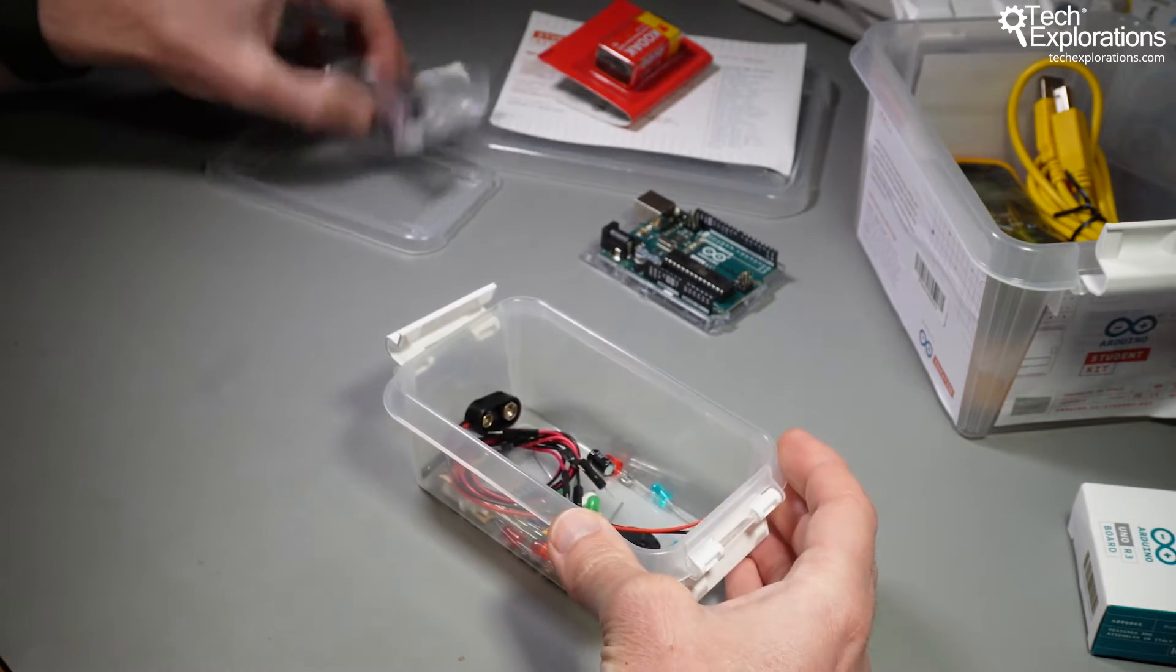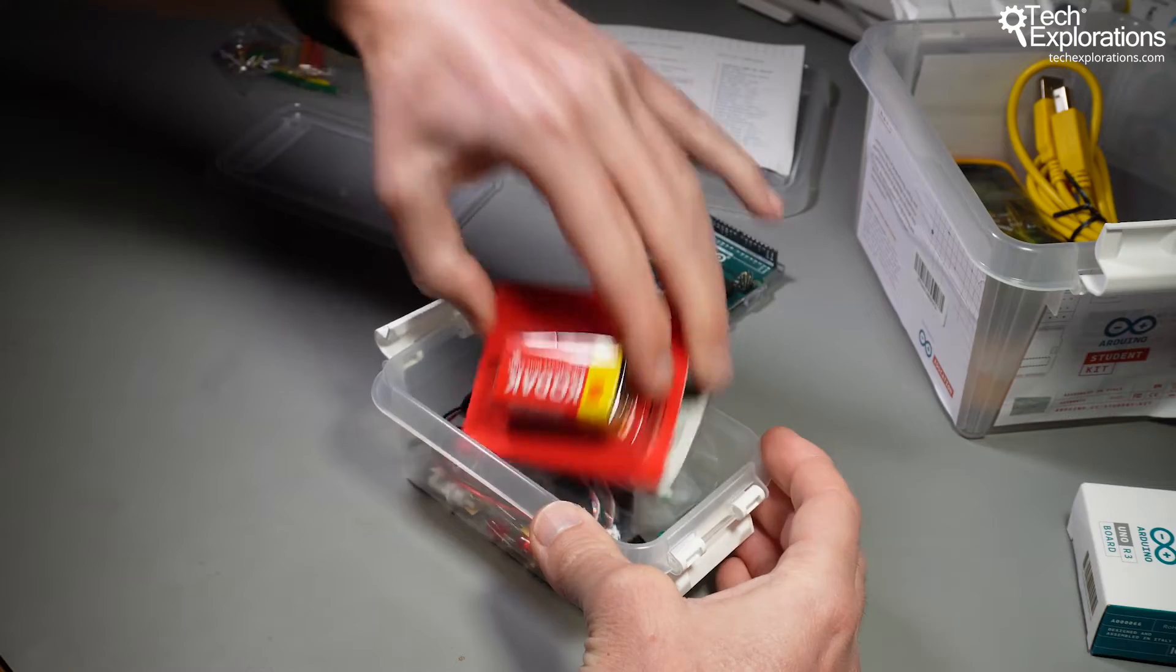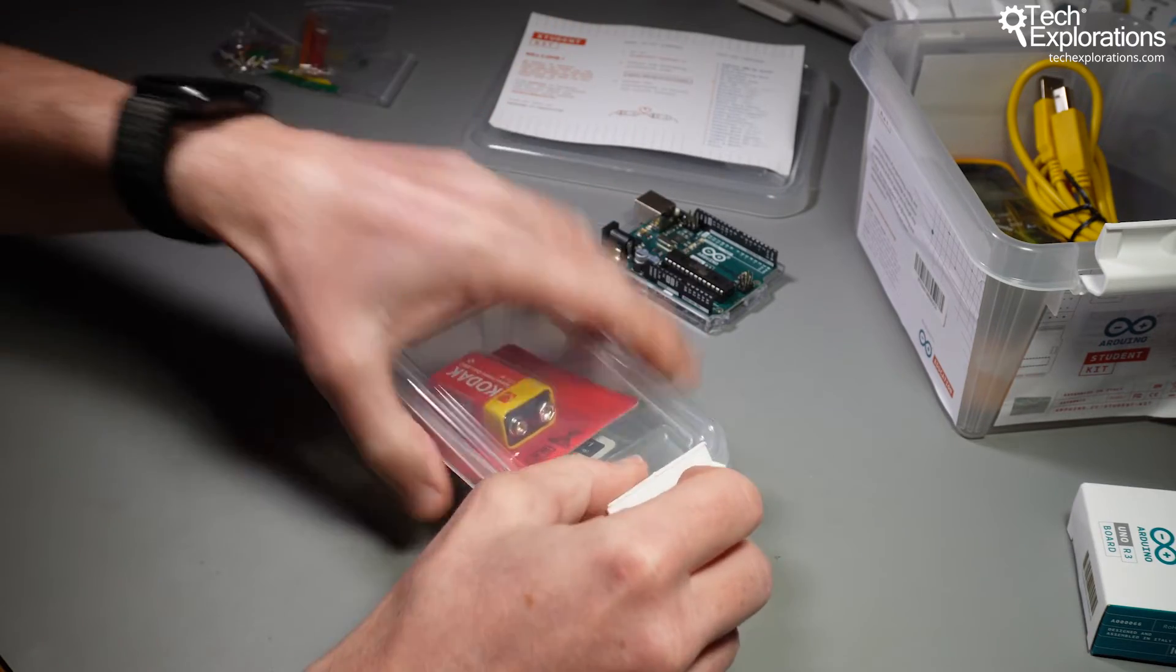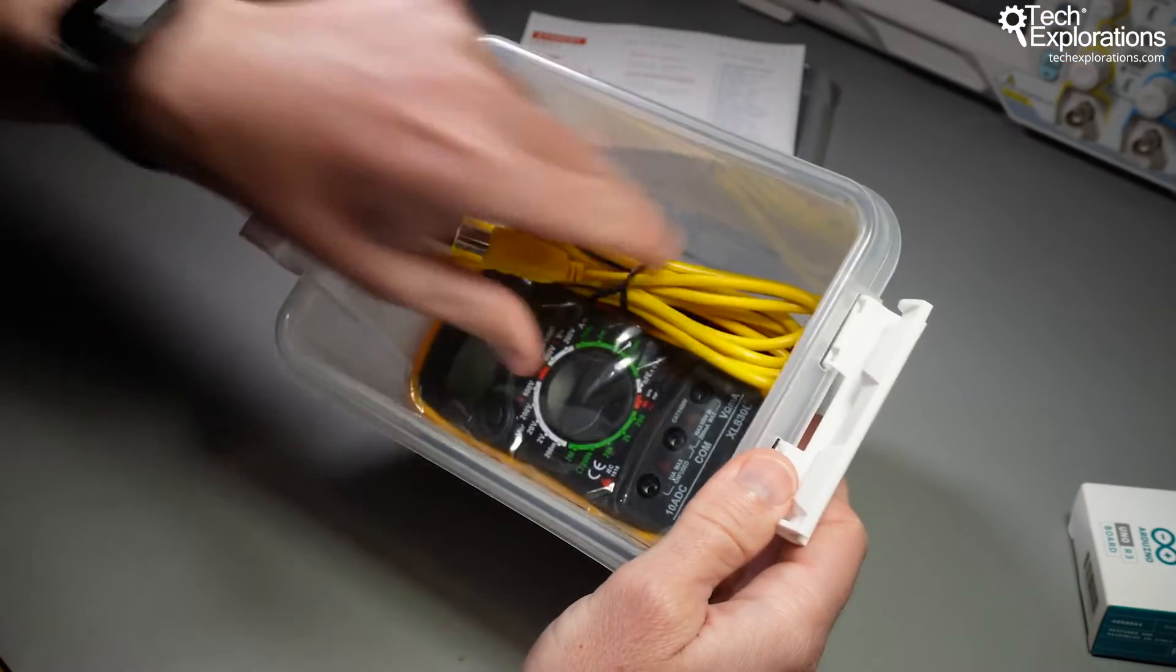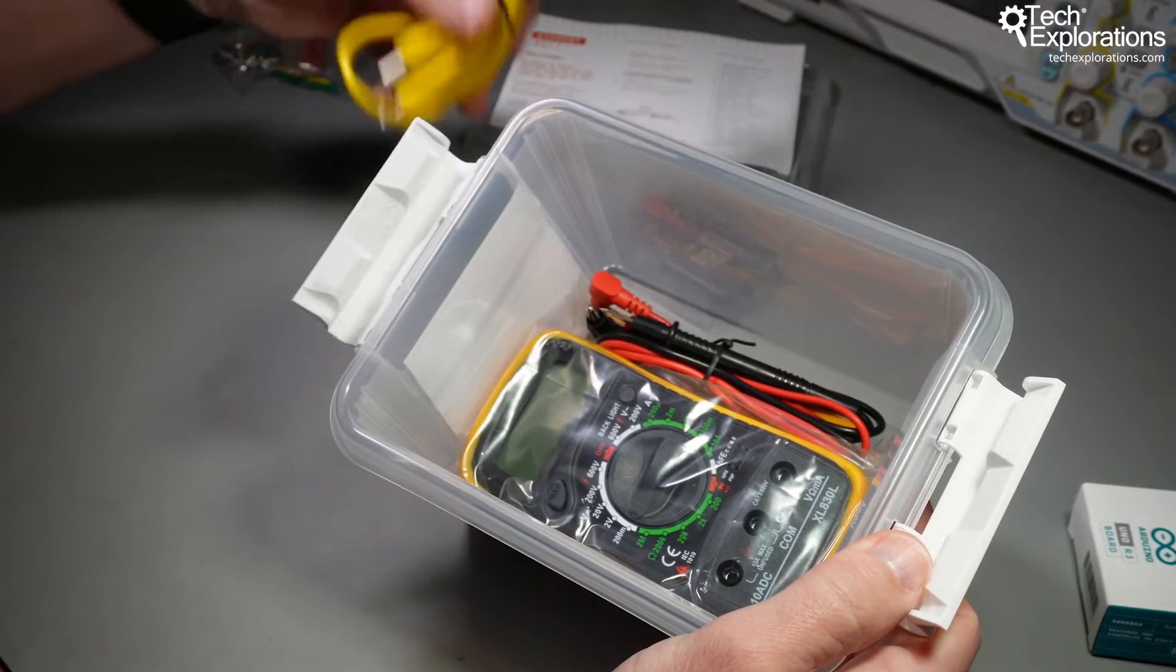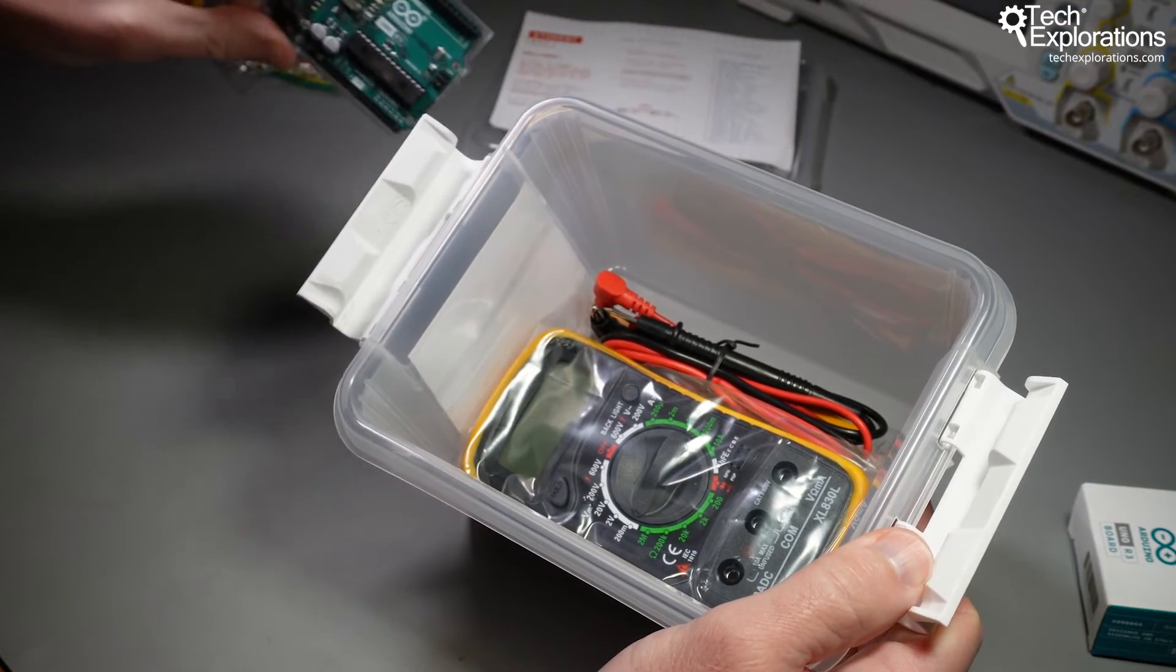Okay, so that's what's inside in this box. I'll put it back together. Continue with the large box. There's the USB cable that allows you to connect your Arduino to your computer.